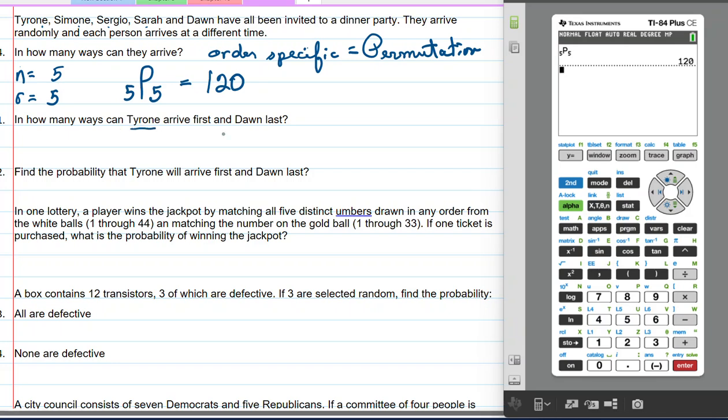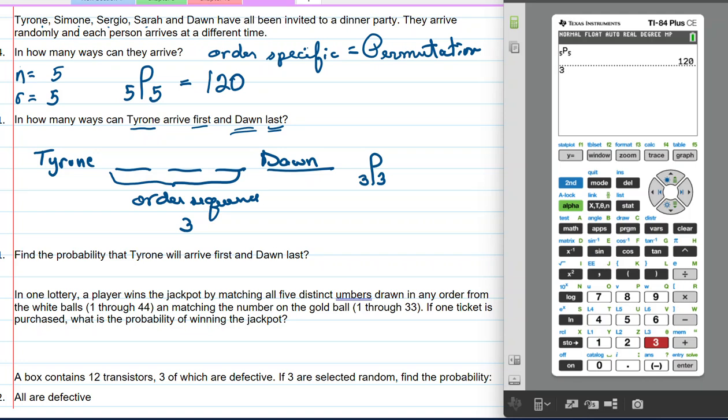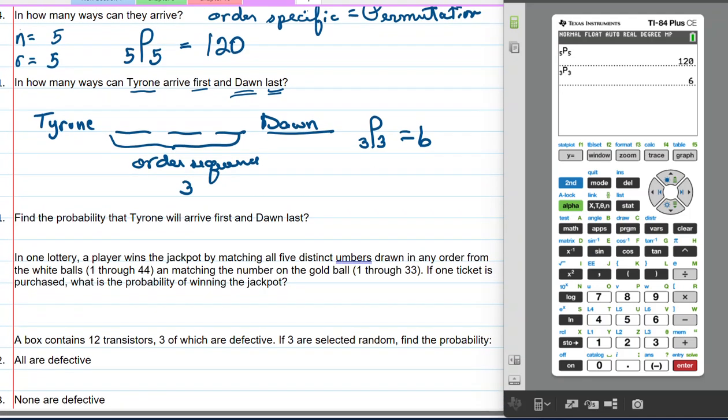So now we have the second one. In how many ways can Tyrone arrive first and Dawn arrive last? On this one I'll need a little space. We're saying Tyrone is first, and then we have 1, 2, 3, and Dawn is last. So we're only talking about this order sequence. So we have 3. So I'm going to enter my 3 first, go to math, PROB, choose number 2 and write 3. And I get 6.